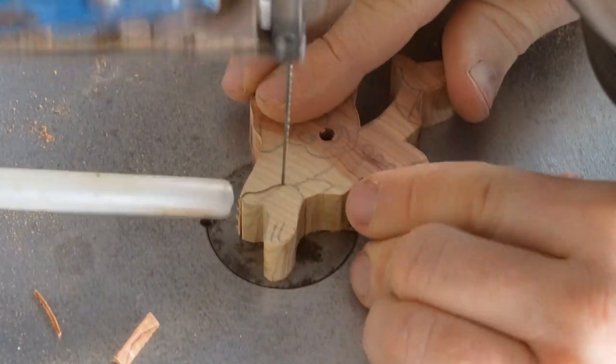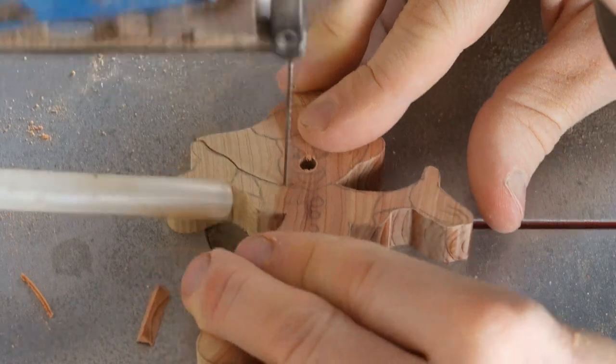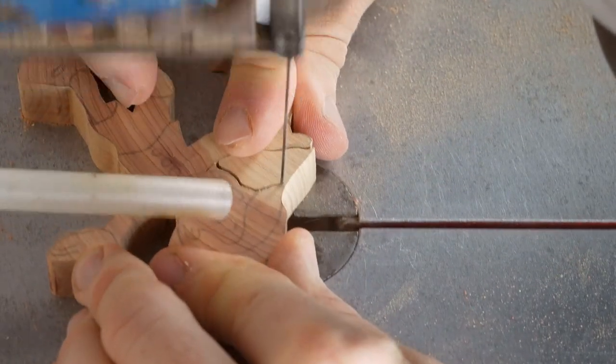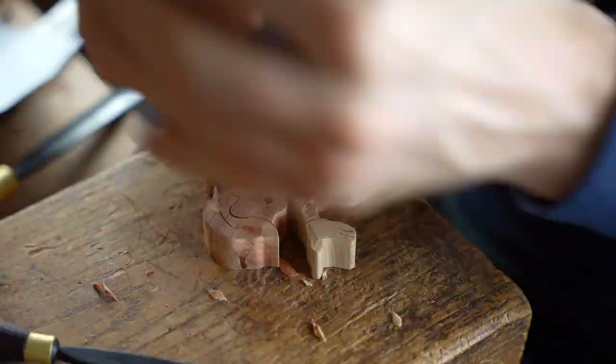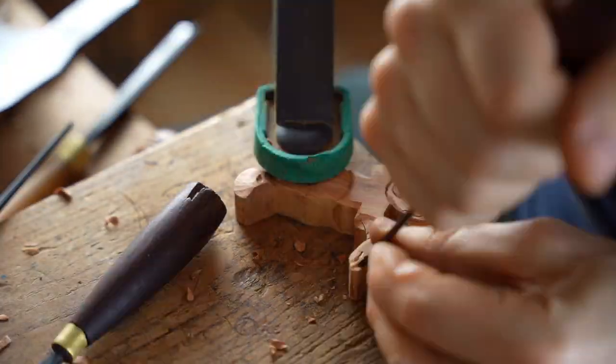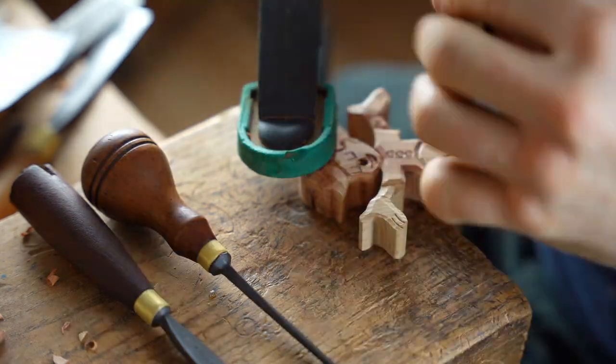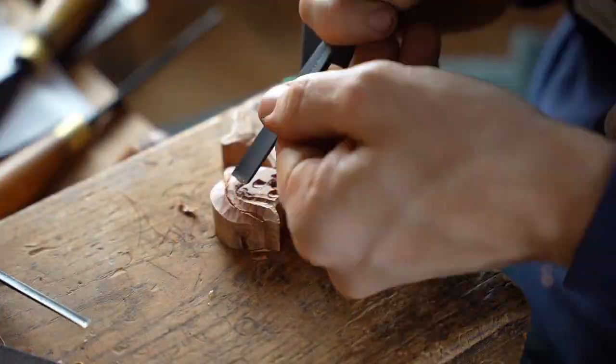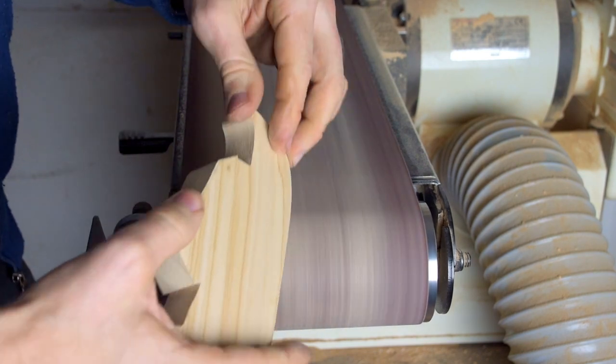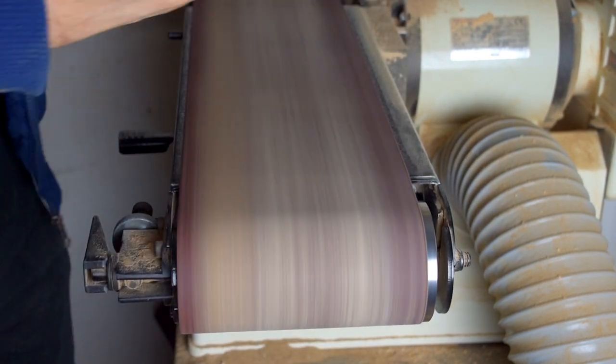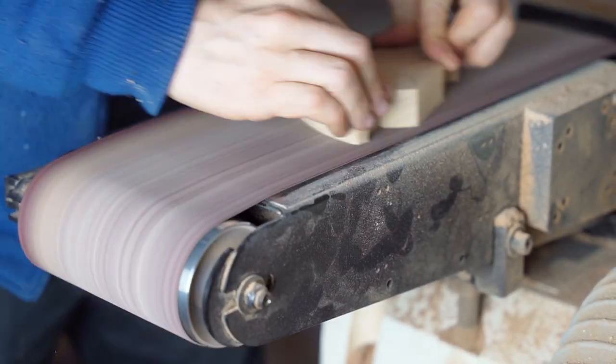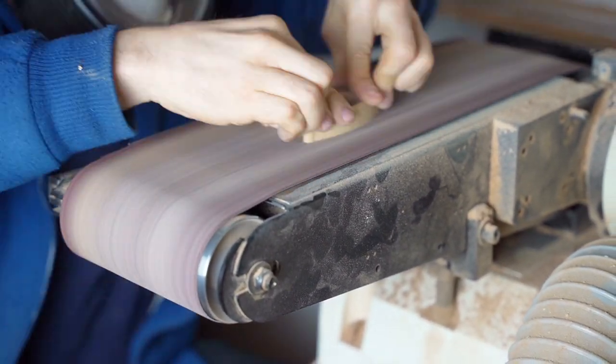So once you have finished your scroll saw work and your hand carving, we're then concentrating on the finishing of our toys. So we start off by sanding everything down with a very fine sandpaper, so this one here is a P180 but quite a worn P180, just to sand everything over. You might want to do some hand sanding as well if you think it's necessary.